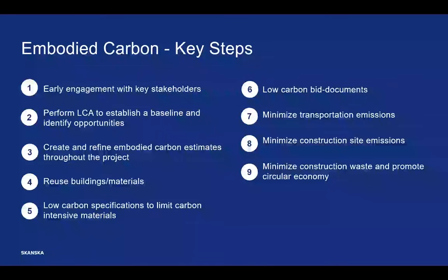To wrap up, the key steps to implement are: early engagement with key stakeholders; performing life cycle assessment to establish a baseline and identify opportunities early on; creating and refining embodied carbon estimates throughout the project; finding opportunities to reuse buildings or materials entirely; establishing low-carbon specifications to limit carbon-intensive materials and low-carbon bid documents; and minimizing transportation, construction site, and waste-related emissions while promoting a circular economy. Carbon offsets are also an option for the remaining emissions that can't be actively reduced — but today we focused on strategies to actively reduce embodied carbon in construction.